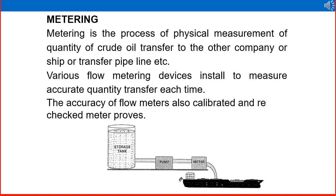Metering facility: wherever we are selling crude oil — to another country, another company, or a refinery — we have to have a proper metering facility to confirm how much quantity is transferred, for billing purposes. Metering is the process of physical measurement of the quantity of crude oil transferred to another company, ship, or pipeline. Various flow metering devices are installed to measure accurate quantities each time, and the accuracy of flow meters is calibrated and rechecked using meter provers.